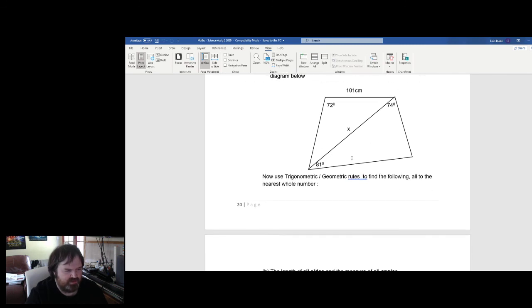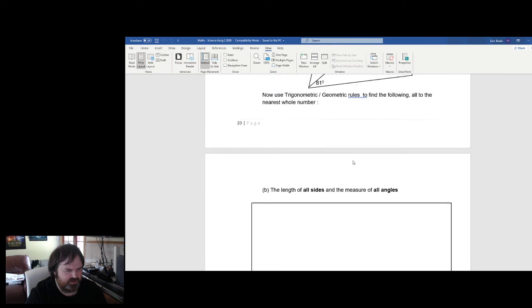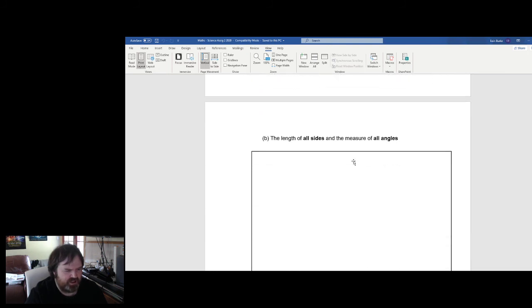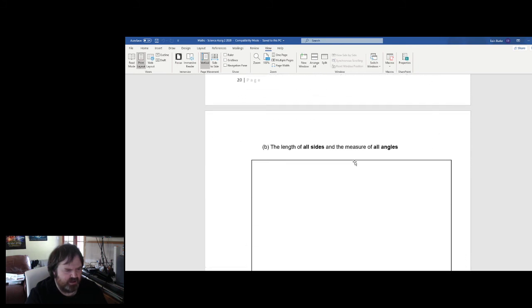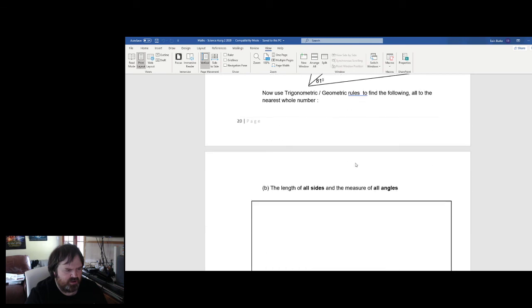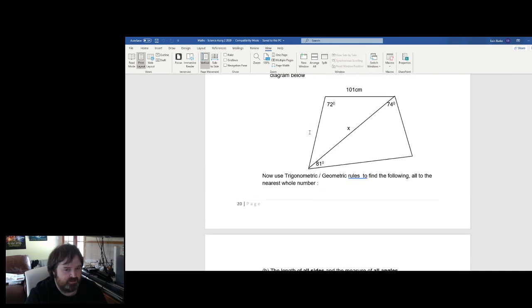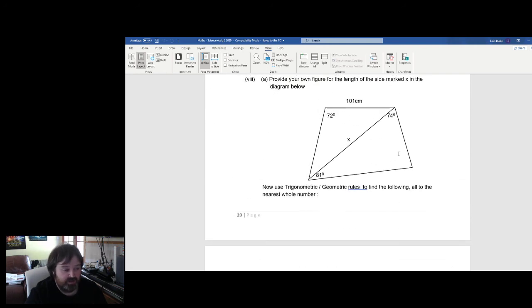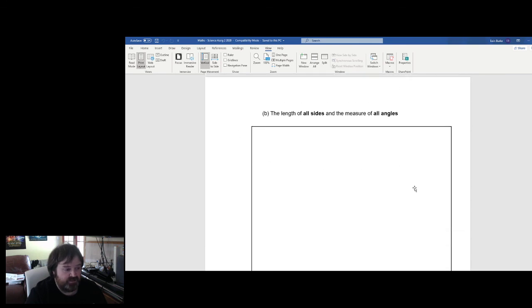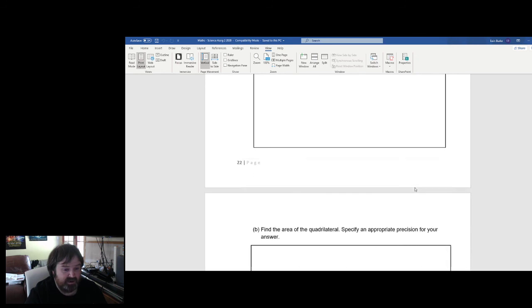Now you use the trigonometric geometric rules to find the following all to the nearest whole number. That is the length of all sides and the measure of all angles. Okay. So, you're looking at this one here and you need to find what the length of this side here is, what the length of this side here is, what the length of this side here is, what's that angle and what's that angle and what's that angle. Okay. Now, that is not necessarily a right angle. Okay. Don't be fooled and thinking, that looks a bit like a right angle. No, don't assume that. You need to find each one of the missing bits here. And this will be different for everybody because you're going to be picking different values of x.